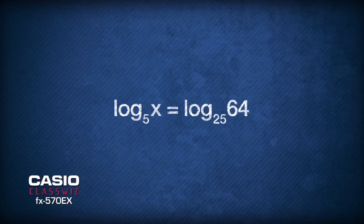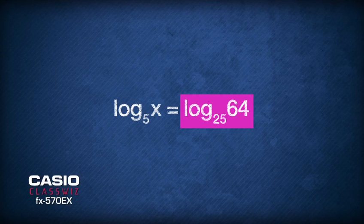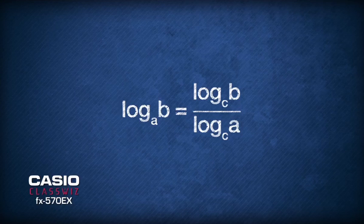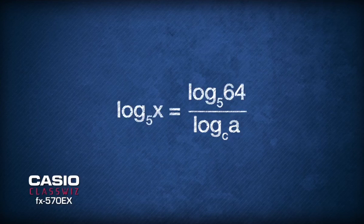To solve this question, notice that on the right hand side of the equation, logarithm base 25 can be rewritten in terms of logarithm base 5 using this given formula in your formula list. Following the formula, the right hand side of the equation becomes logarithm base 5 of 64 over logarithm base 5 of 25.